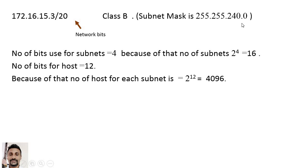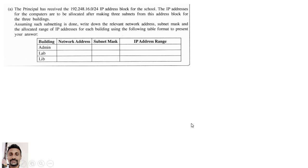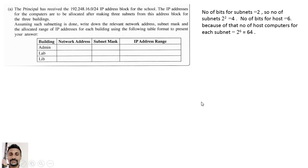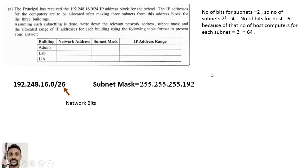Now let's take the network question from the 2019 A/L ICT paper. The IP address 192.248.16.0/24 has no subnets because it is Class C with 24 bits for the network. According to the question, we need to create 3 subnets for the admin, lab, and library buildings. To create 3 subnets, we must borrow at least 2 bits from the host part, giving us 192.248.16.0/26 with subnet mask 255.255.255.192.